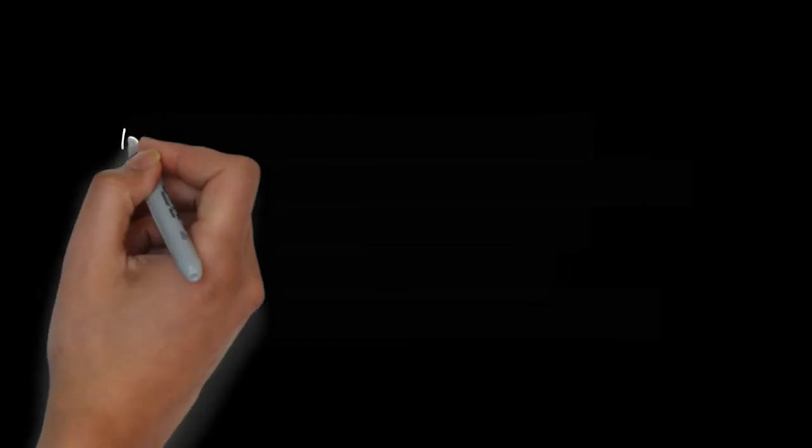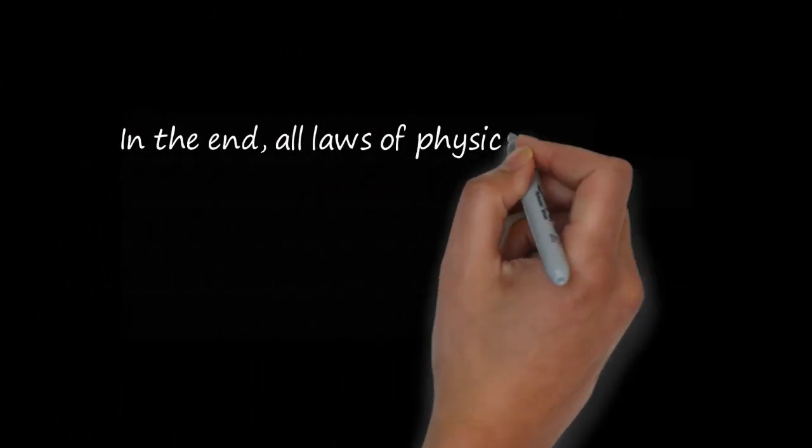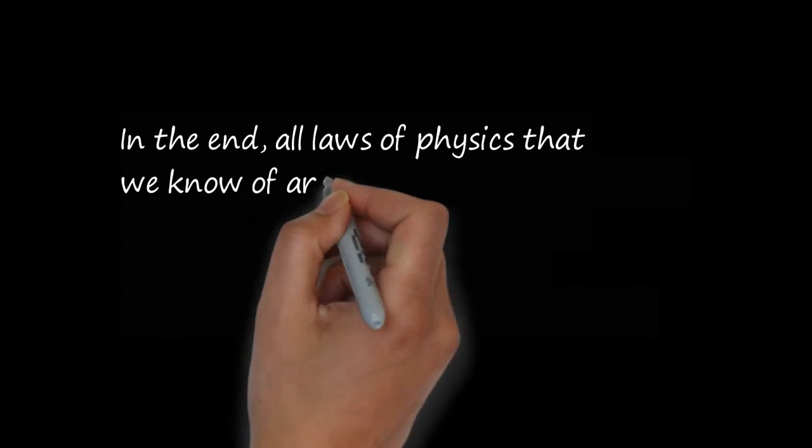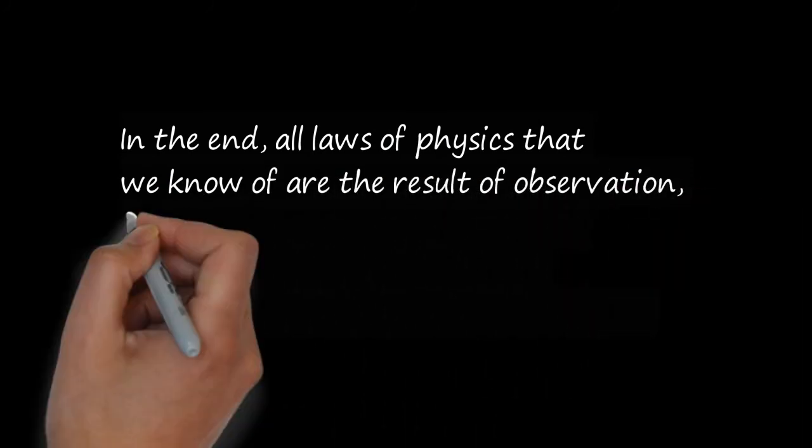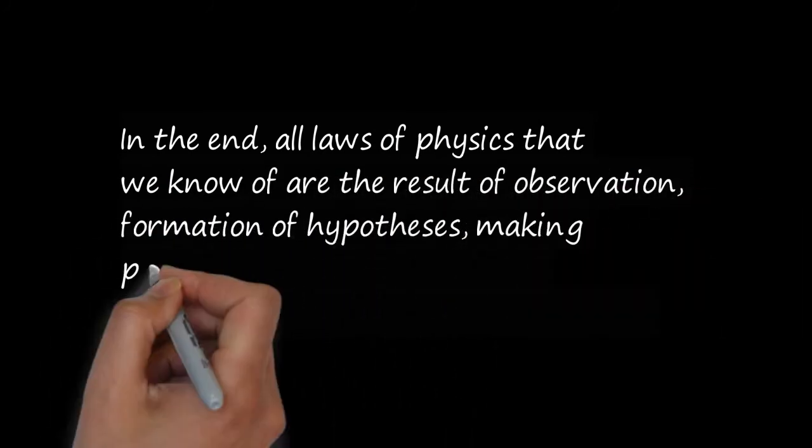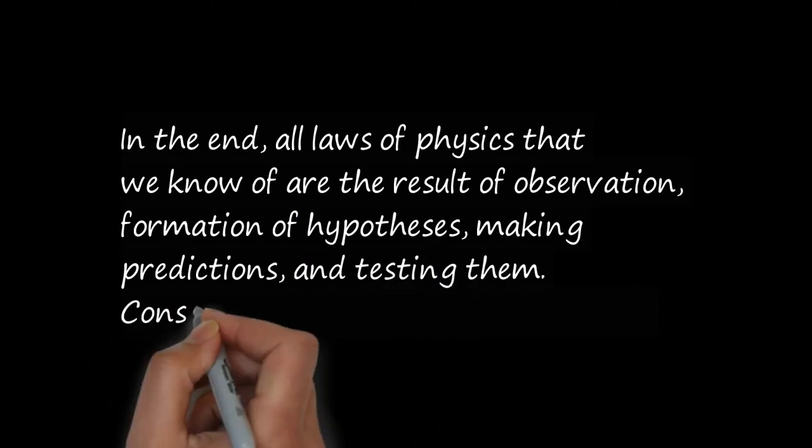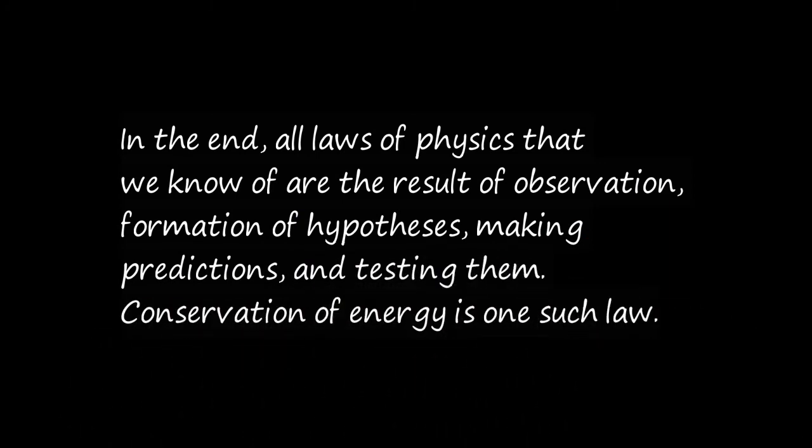This is one of the most important rules that scientists have found which describes natural phenomena. Unfortunately, there is no non-circular proof of energy conservation in the end. All laws of physics that we know of are the result of observation, formation of hypotheses, making predictions, and testing them.